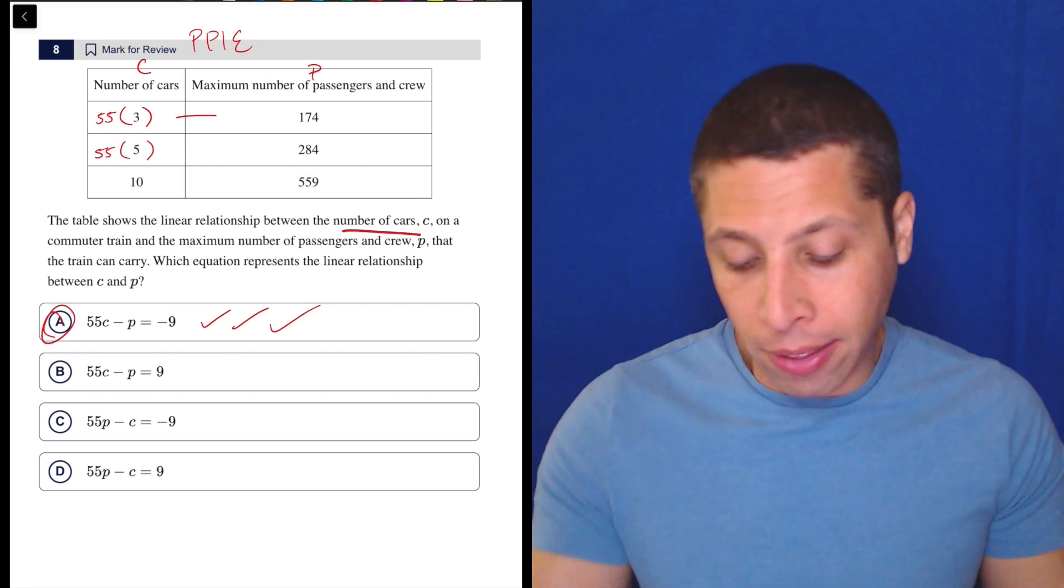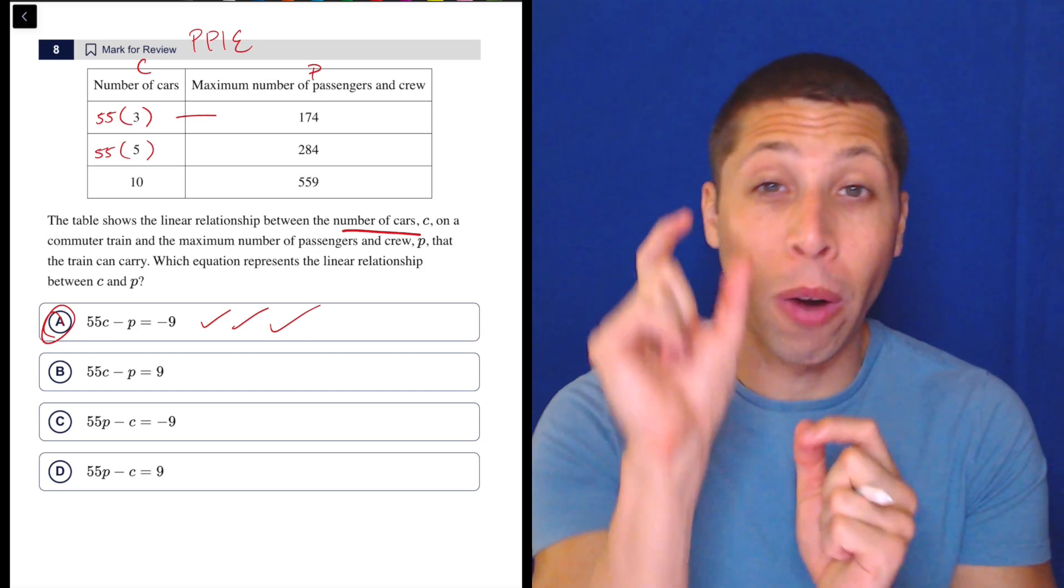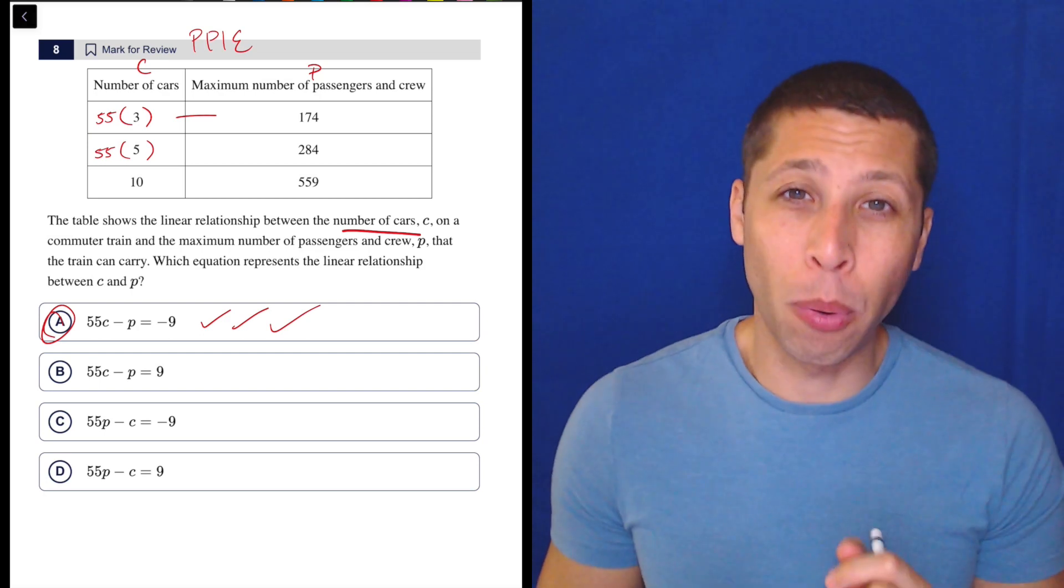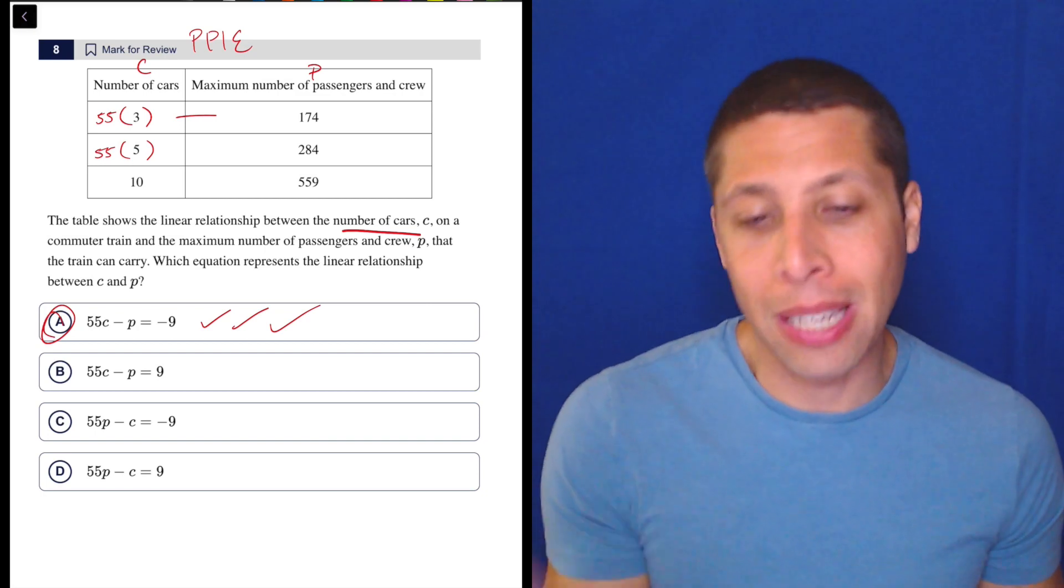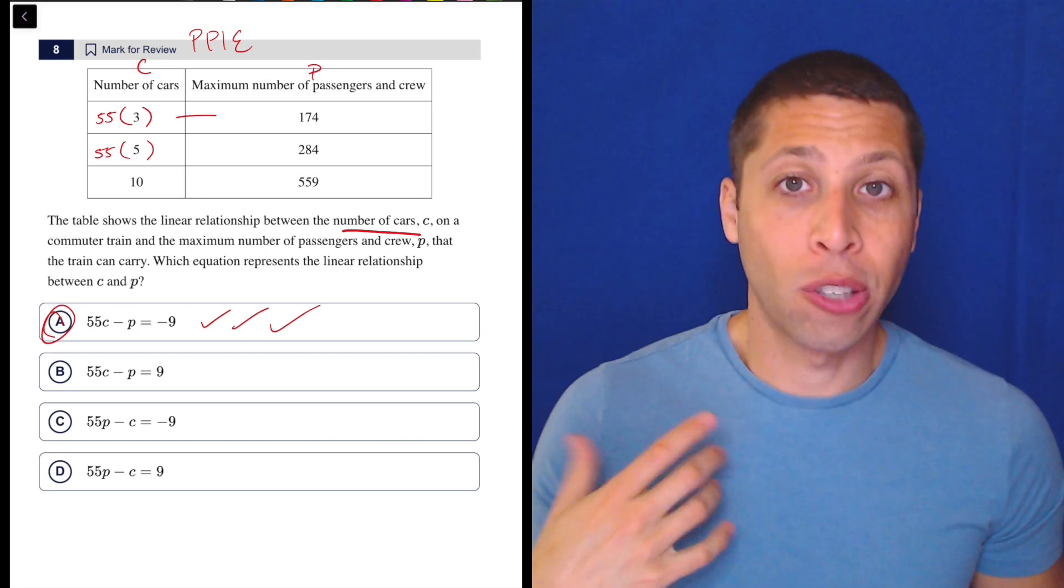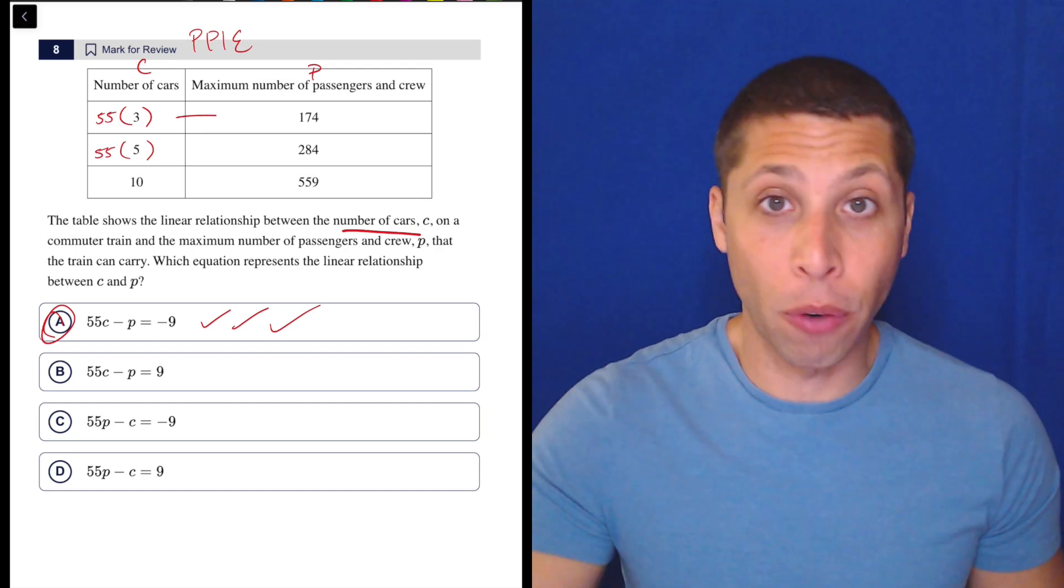The reason I went down the line with this one equation instead of something that I normally do, which is I usually pick one point and try that same point in all the equations, is I can tell that these equations are switching the c's and the p's and I just don't want to get confused by that. So let's keep the most complicated thing consistent and then we'll go from there.